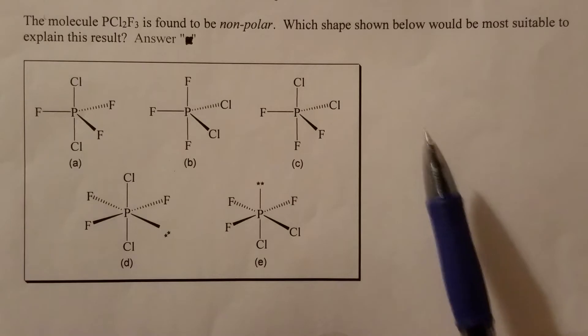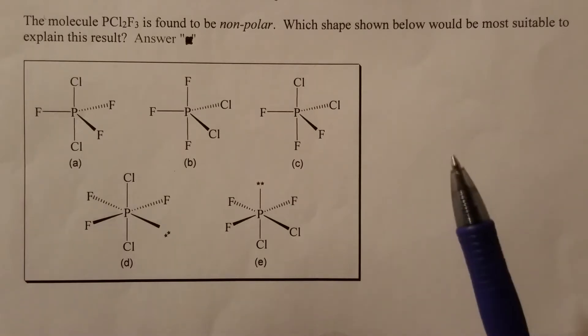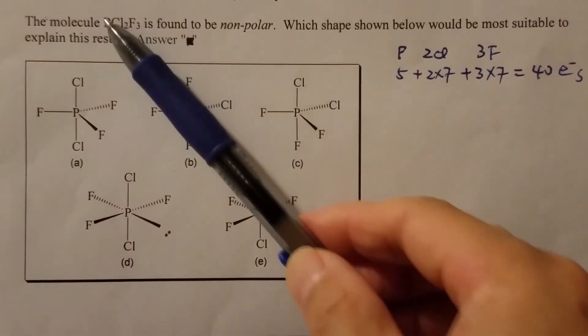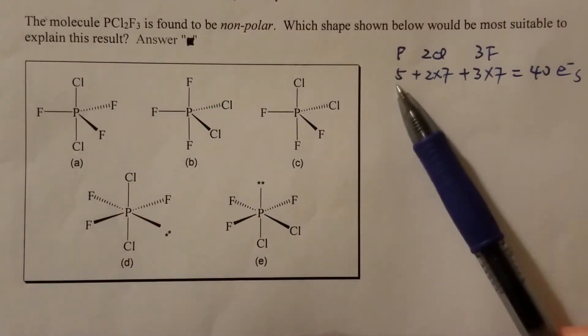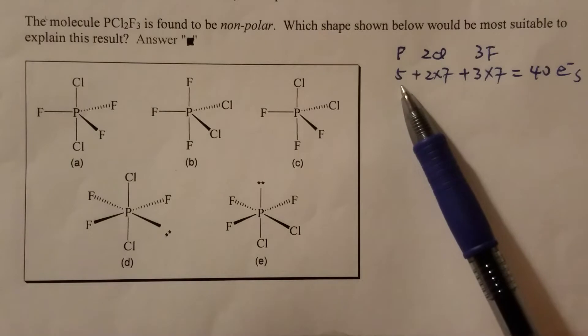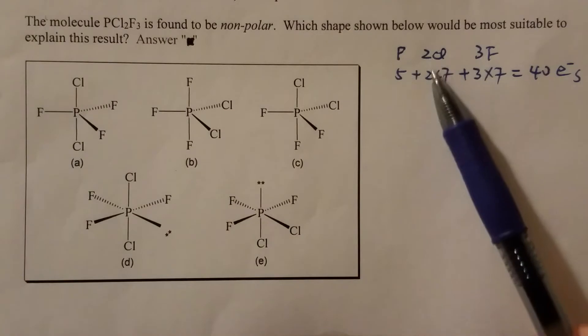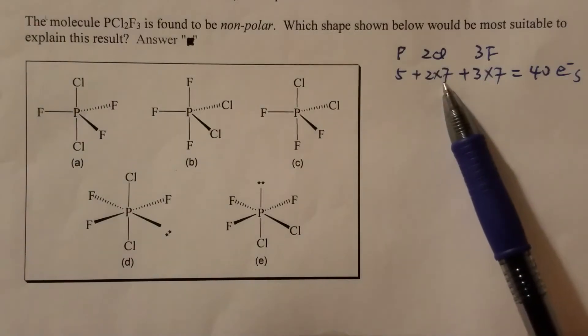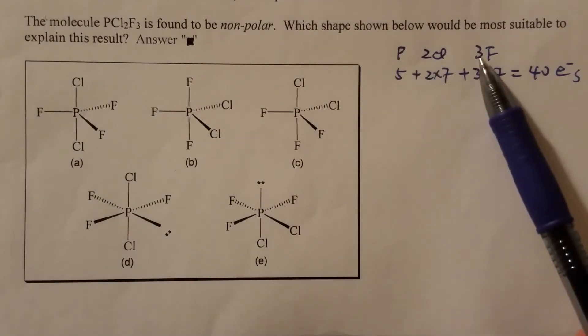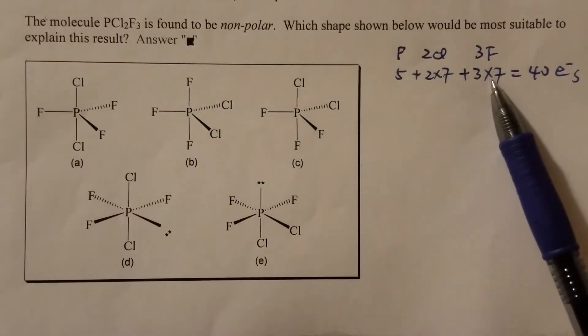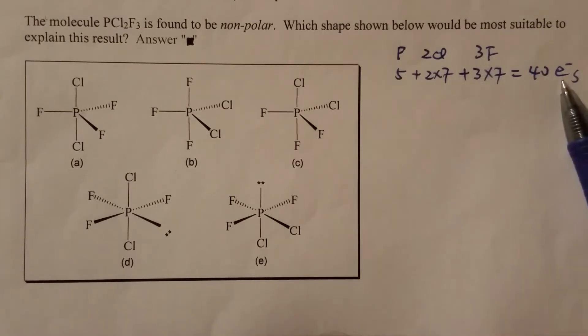First, let's find out the total number of valence electrons. There is one phosphorus atom in the molecule, number of valence electrons is 5, two chlorine, each chlorine has 7, three fluorine, each fluorine also has 7 valence electrons. Then the total, you add them together, that's 40 electrons.